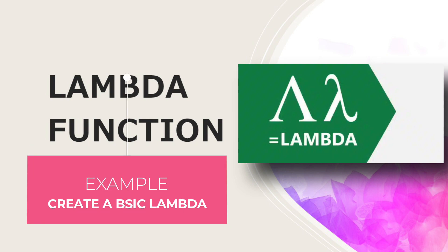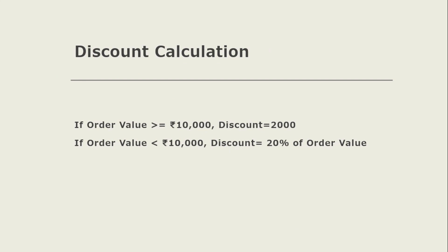Let's look at a simple example. Suppose a manufacturer is offering a discount on sales. If a customer places an order and the order value is greater than or equal to 10,000 rupees, he offers a fixed discount of 2,000. Else if the order value is less than 10,000, he offers a discount of 20%. The manufacturer can use the Lambda function to create a custom function for this discount calculation.